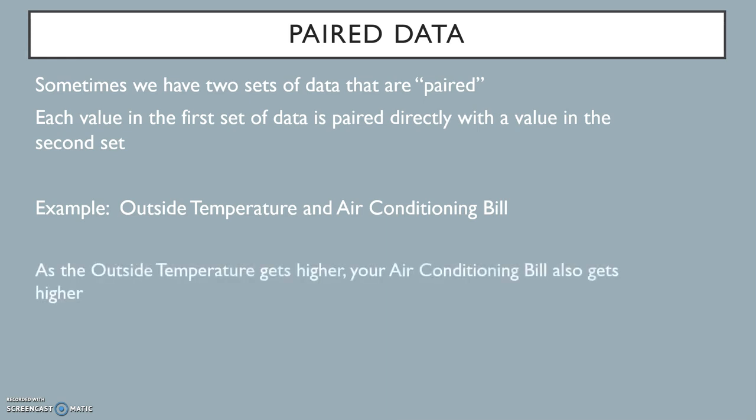We would expect that there is a relationship between these two variables. Namely, that as the outside temperature gets higher or hotter, we would need to use the air conditioning more, so the air conditioning bill would also get higher. When two variables are related in such a way that the increase or decrease of one variable suggests that there will be an increase or decrease in the other variable, we call these variables correlated.